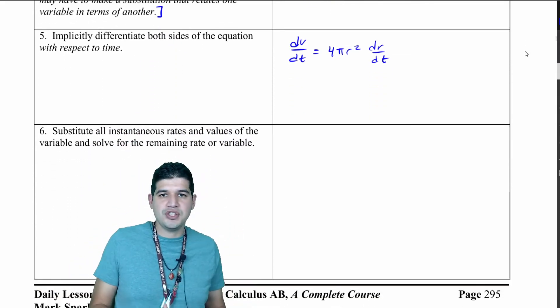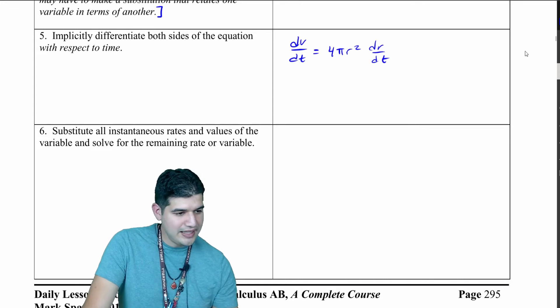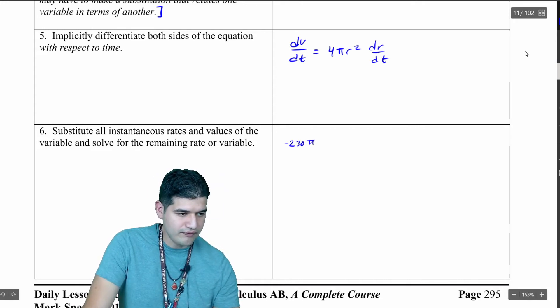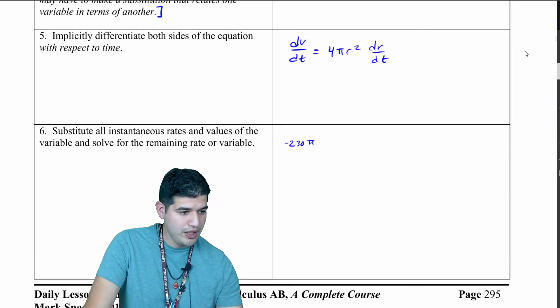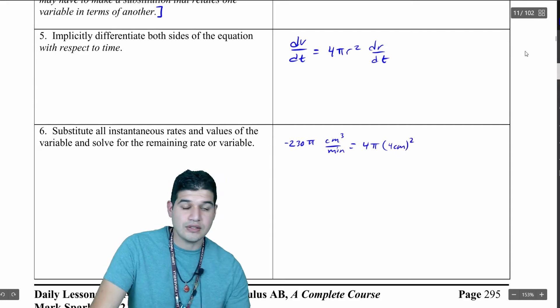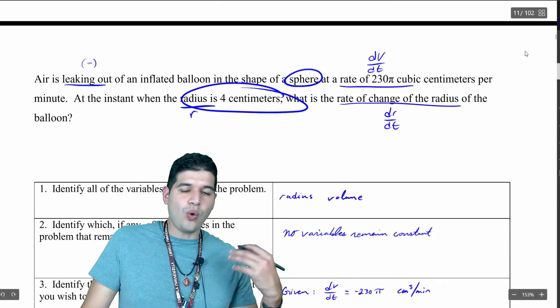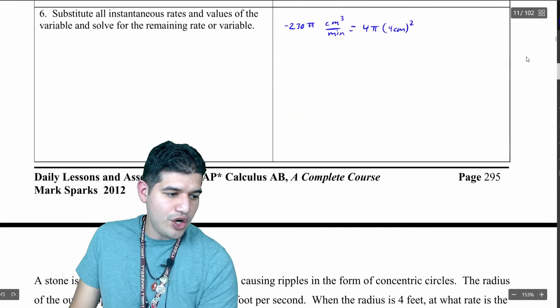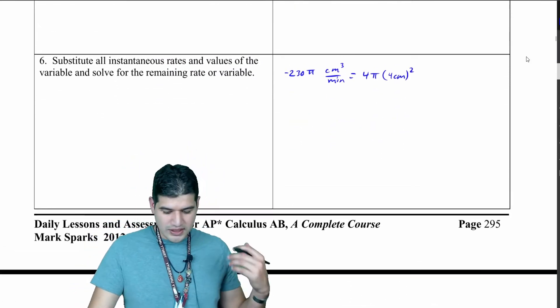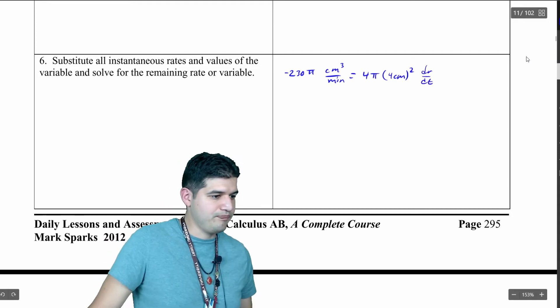Now that we've taken it, all you need to do is substitute in all of those values that you're given. We're given dV/dt, that is negative 230 pi cubic centimeters per minute. That equals 4 pi, and then we're going to get 4 centimeters squared because that's the radius. If you go back up and look at the problem, that was one of the things that we underlined. So 4 centimeters, we're going to square it, and we're going to go dr/dt.